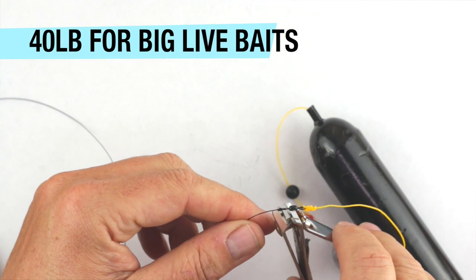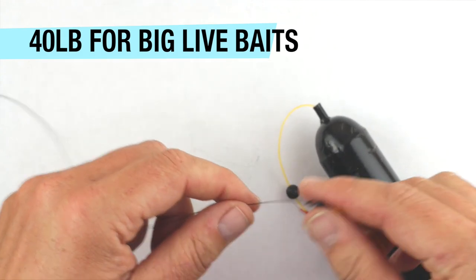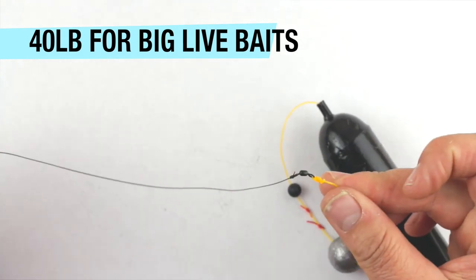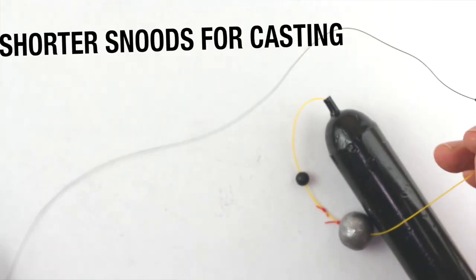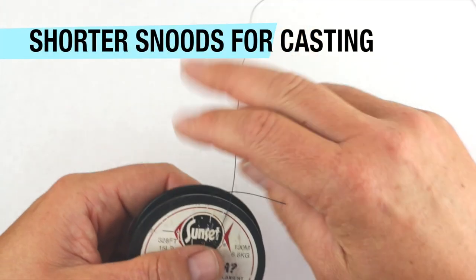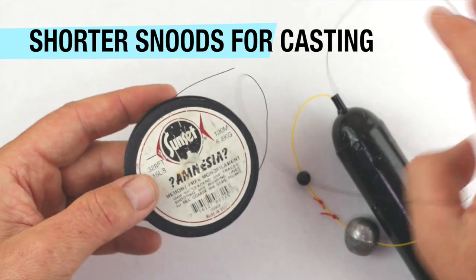And then again, depending on the depth you're fishing over, usually if I'm doing this from the kayak or piers, where I don't have to cast too far, I'll take off a good metre and a half, maybe even two metres, if it's going to drift around a bit.